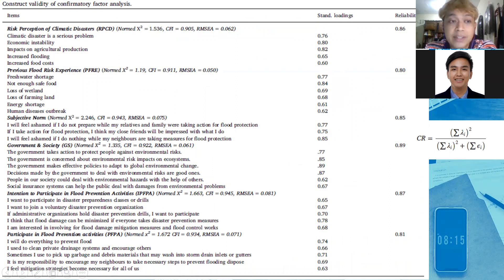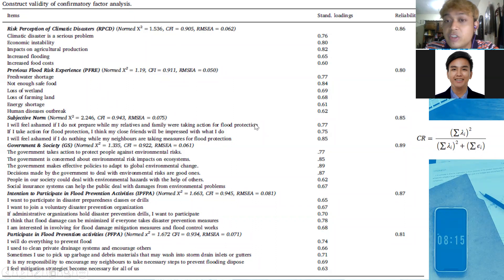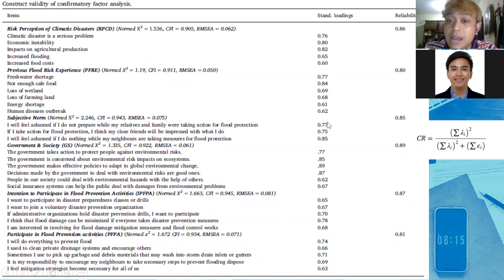The endogenous variables are intention to participate in flood prevention activities and actual participation in flood prevention activities. You can see the standard factor loadings for each indicator. For example, subjective norm has three questions, and these indicators are good — factor loadings higher than 0.5 — meaning they are good representations of the subjective norm construct.